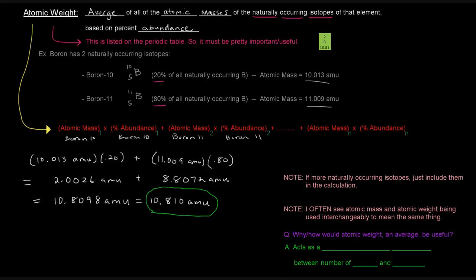And if you'll notice on the periodic table, that's actually the number that's written there, that number, that 10.81, that's the atomic weight. So again, if you're doing a problem that has more than just two naturally occurring isotopes, just be sure to include them in the calculation. And another thing, again, I often see atomic mass and atomic weight being used interchangeably to mean the same thing. So definitely talk to your instructor about what it is they're talking about. Make sure it's clear, kind of, what they're talking about.